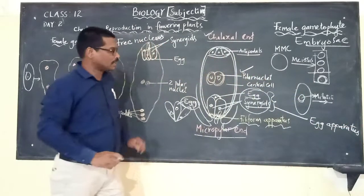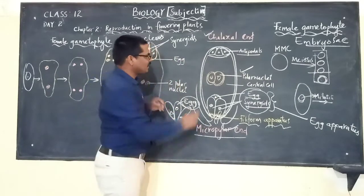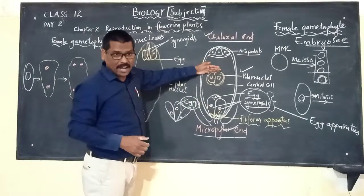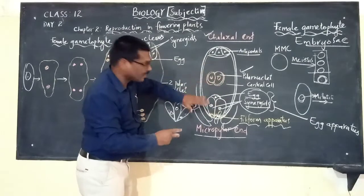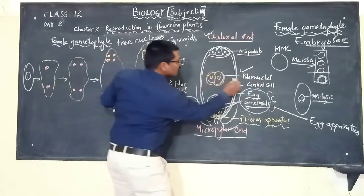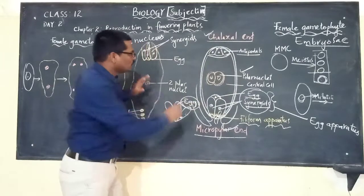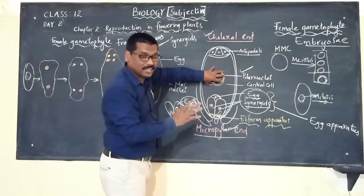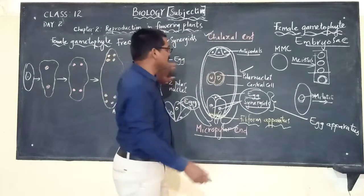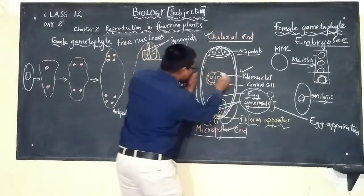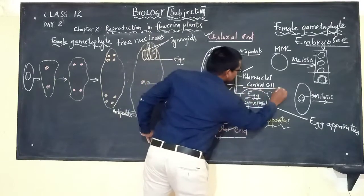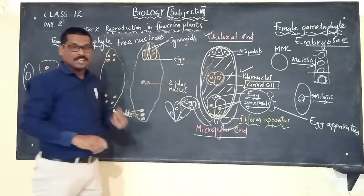The egg apparatus consists of the egg and the two synergids. The two polar nuclei present at the center are not enclosed by a cell wall. The entire large cell containing the two polar nuclei is called the central cell.